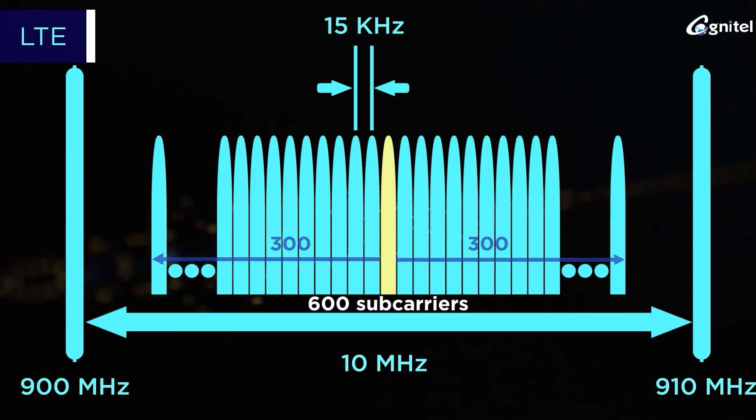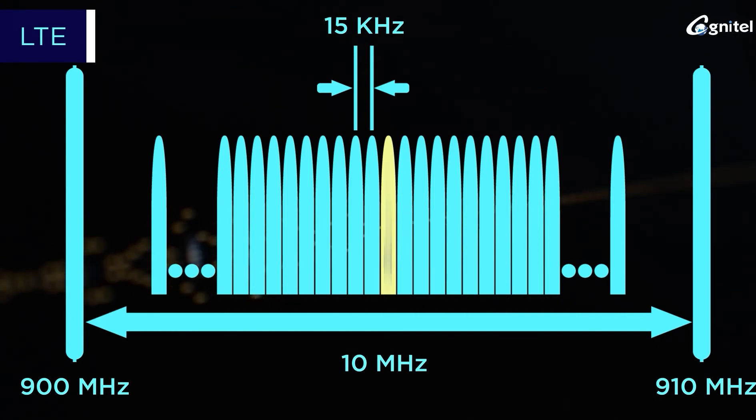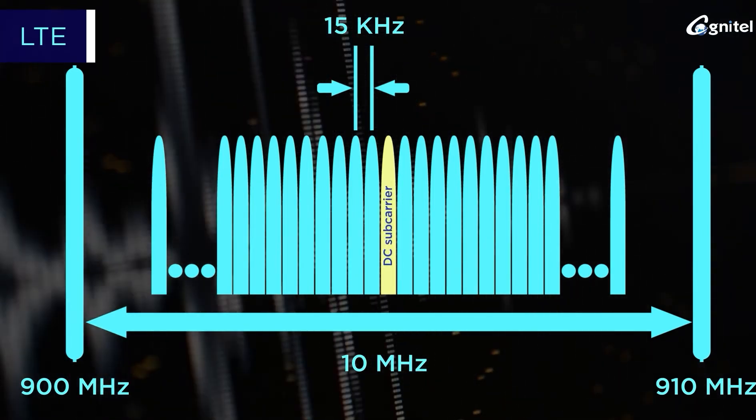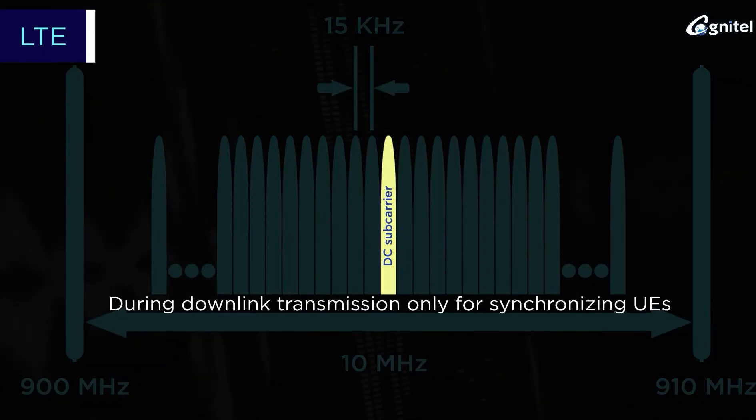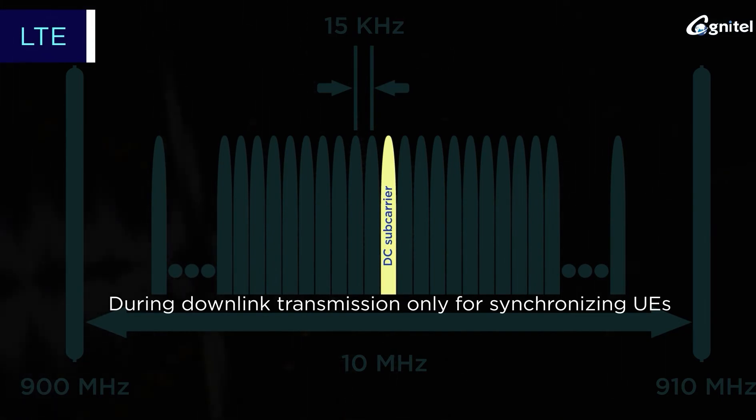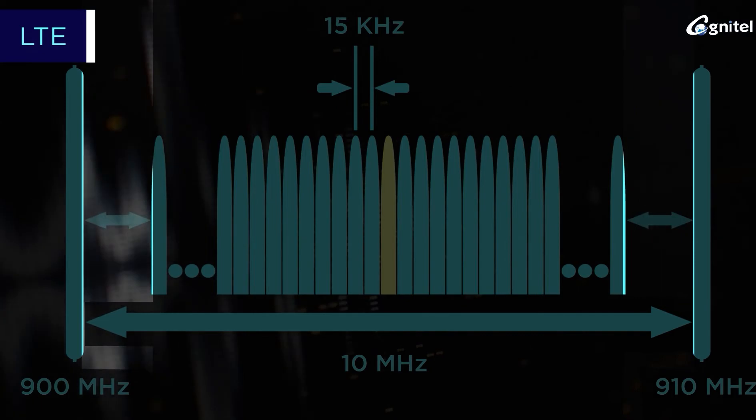As per LTE specifications, 600 such subcarriers can be accommodated in a 10 megahertz spectrum that adds up to 9 megahertz. A direct current (DC) subcarrier without any information is placed at the center during downlink transmission only for synchronizing user equipment devices.